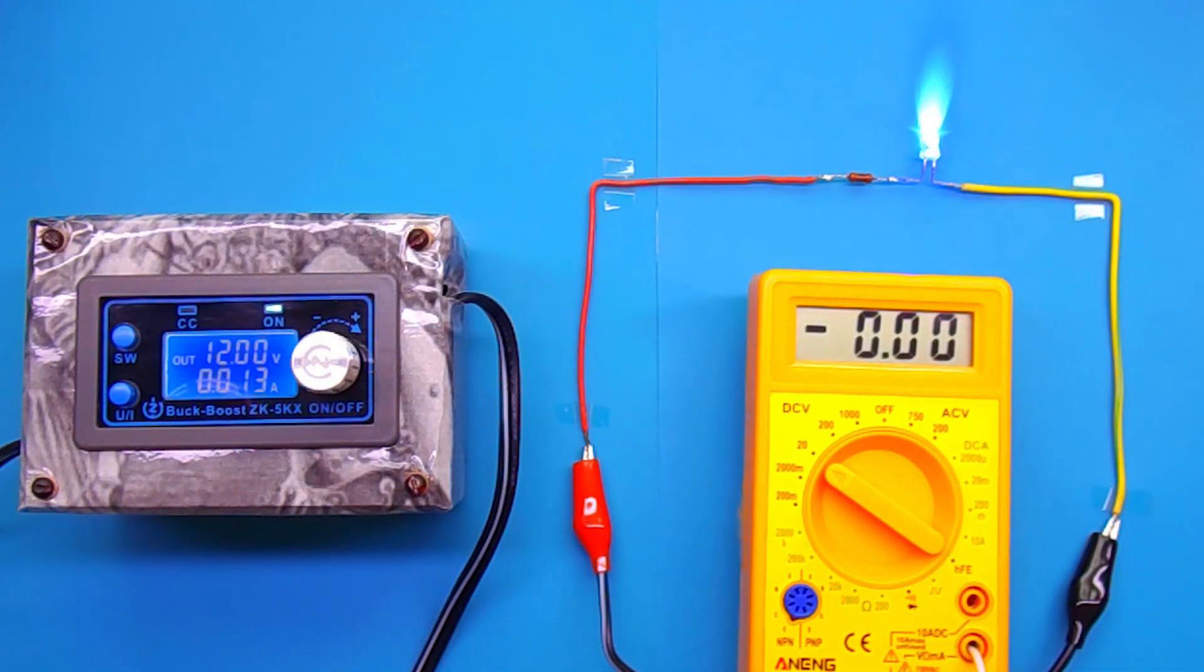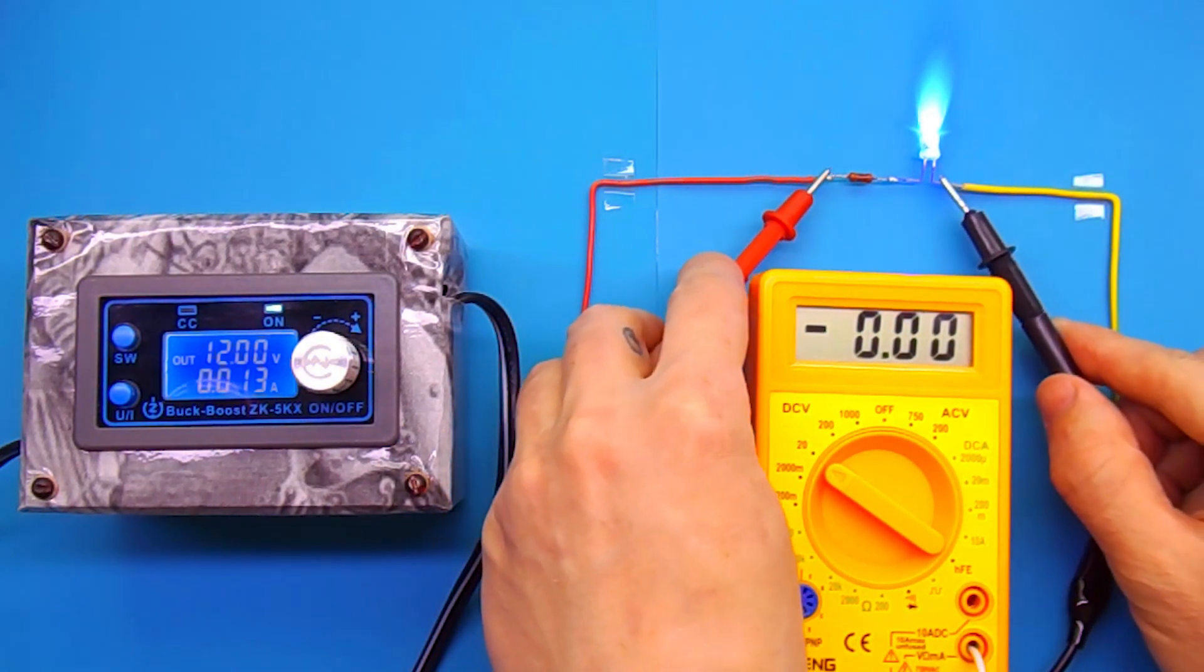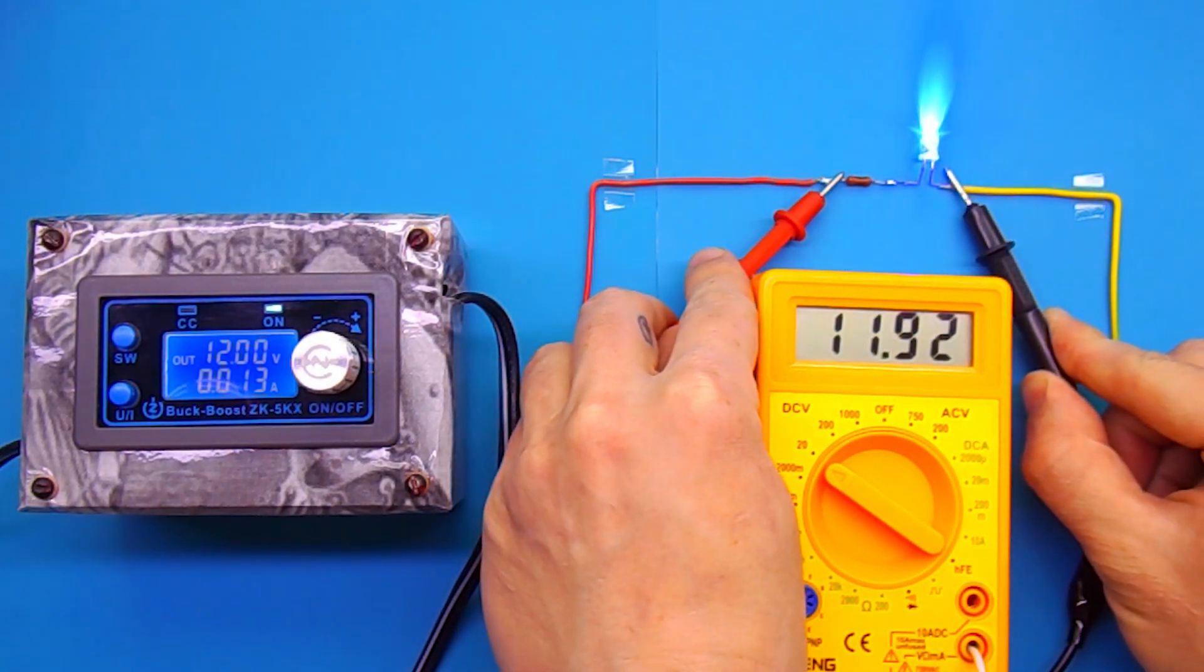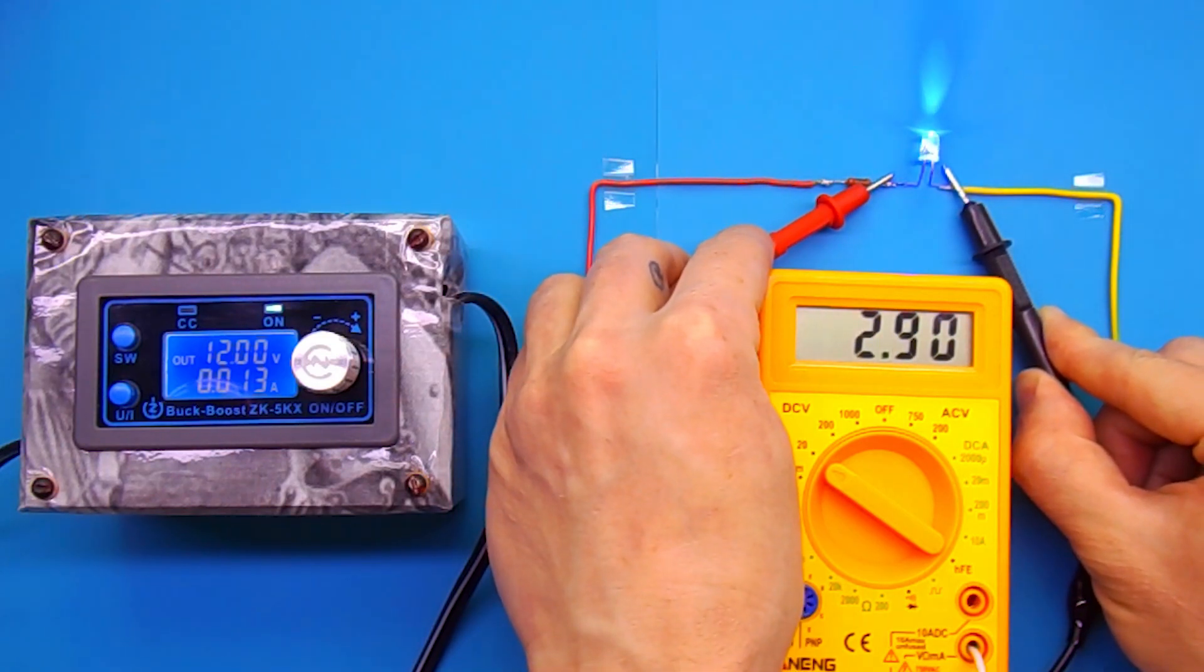You can measure the voltage with a multimeter. The total voltage is 12 volts, and only 3 volts come to the LED. The remaining 9 volts settled on the resistor.